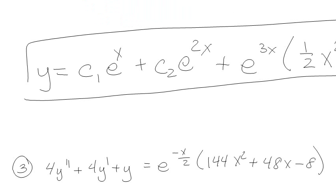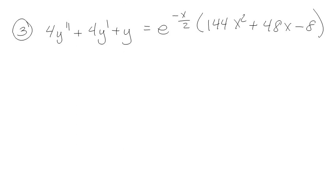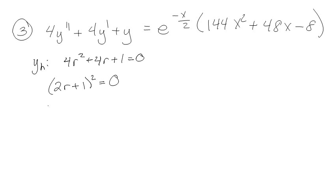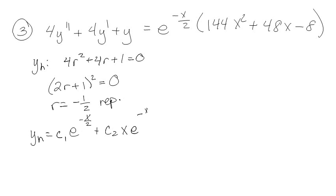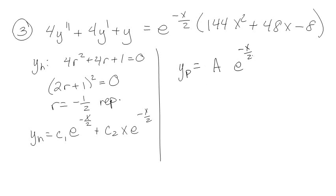We've got two more problems. This one I'm not going to solve all the way out. Writing the characteristic equation: 4r² ... giving r equal to negative one half. So my solutions are c₁e^(-x/2) plus c₂xe^(-x/2) because this is a repeated root. So my yₚ particular guess would normally just be ae^(-x/2) times (ax² + bx + c).